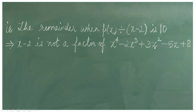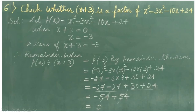Let's check whether x plus 3 is a factor of x cube minus 3x square minus 10x plus 24. Let p of x be equal to x cube minus 3x square minus 10x plus 24. When x plus 3 is equal to 0, solving the equation, we get x equal to minus 3. This implies the zero of x plus 3 is equal to minus 3.